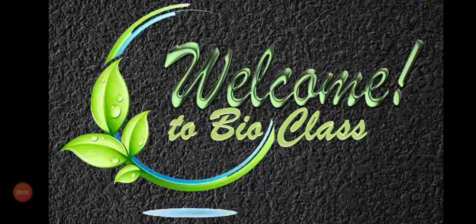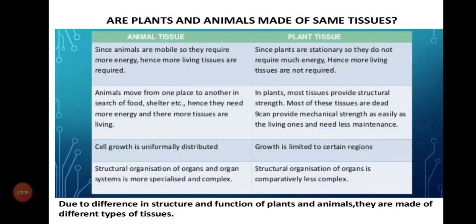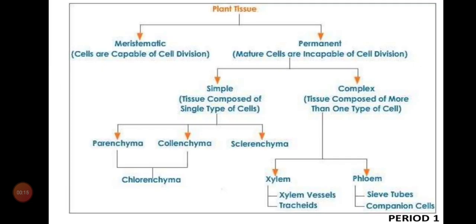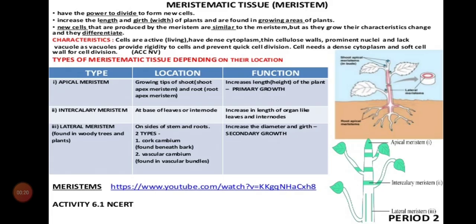Good morning children. We are in the tissue chapter now. We will quickly recap what we have learned till now. We have learned about the difference between plant and animal tissues, and we have learned about the concept map for plant tissues alone. In the last class we learned about meristematic tissues.